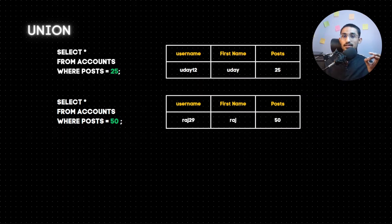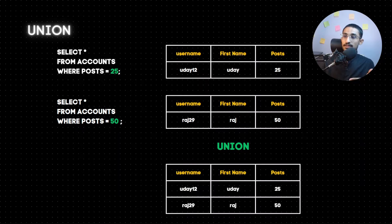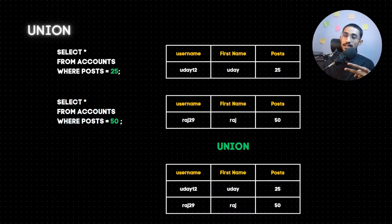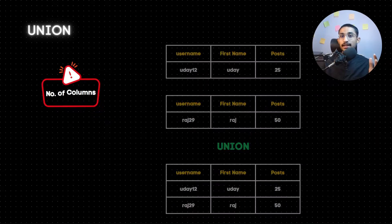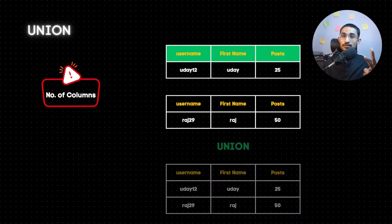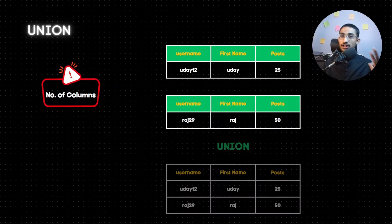The union gives a single output combining results from different tables into a single table. The most important thing in the union is the number of columns. For the first query we have 3 columns: username, first name, and post. The second query also has 3 columns: username, first name, and post. Then the output is also 3 columns.